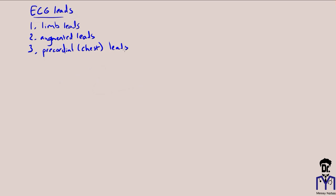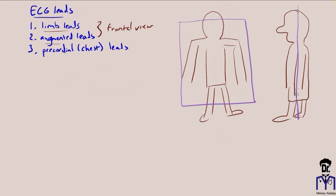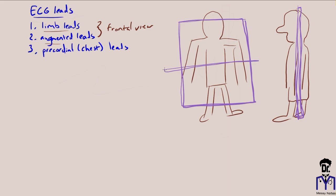Our limb leads and our augmented leads will give us a frontal or coronal view of the heart. Our precordial leads will look at the heart in a transverse or horizontal view. The heart isn't two-dimensional, so we need these views to look at the electrical activity of the heart in a three-dimensional way.